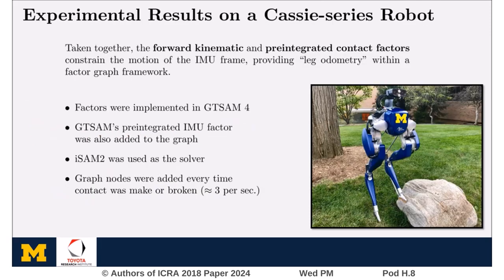We implemented these factors in GTSAM using ISAM2 as the solver. Graph nodes were added every time contact was made or broken, approximately three per second. We tested the state estimator using data collected from a Cassie series robot developed by Agility Robotics. Although we do have a multi-sense camera attached to the robot, these tests were conducted without the use of vision data to simulate the effect of vision loss.